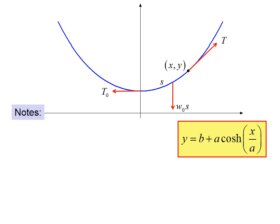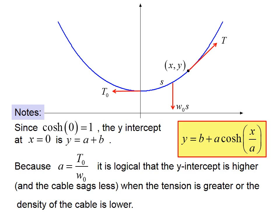Notes. Since cosh zero equals one, the y intercept at x equals zero is y equals a plus b. Because a equals t sub zero over w sub zero, it is logical that the y intercept is higher and the cable sags less when the tension is greater or the density of the cable is lower.